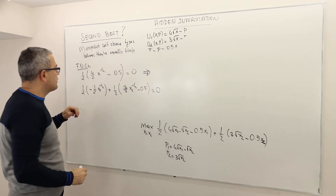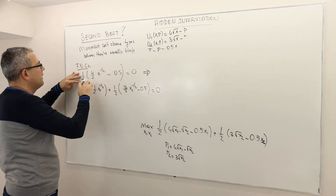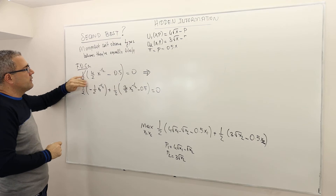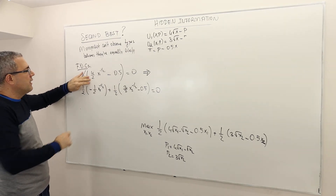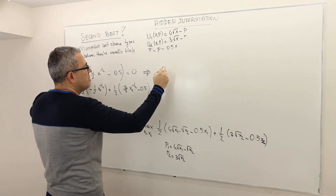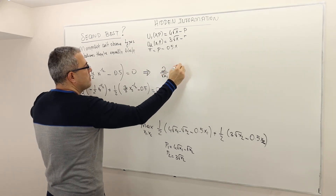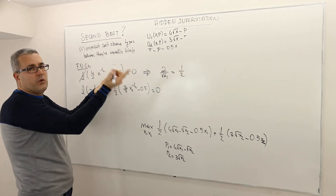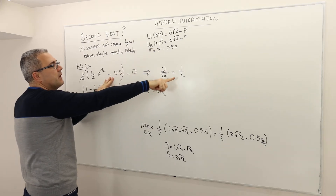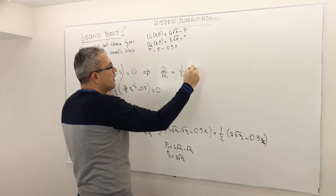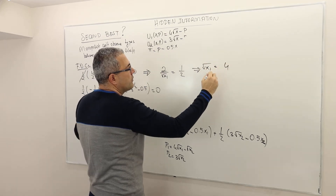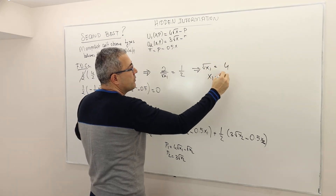Solving the first condition: the one-half factor is irrelevant. Rearranging gives 2 divided by √x1 equals 1/2, so √x1 equals 4, therefore x1 equals 16.